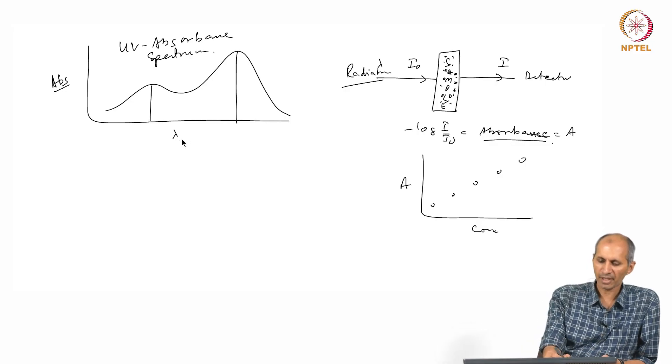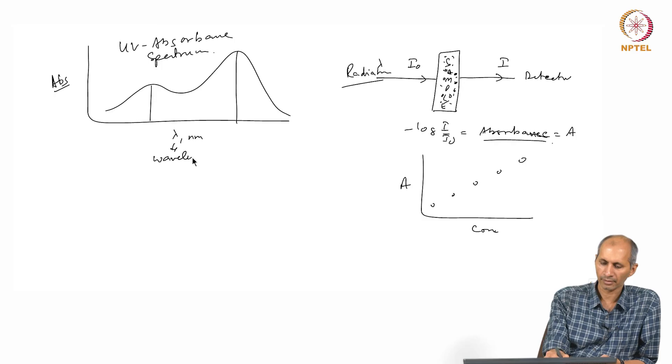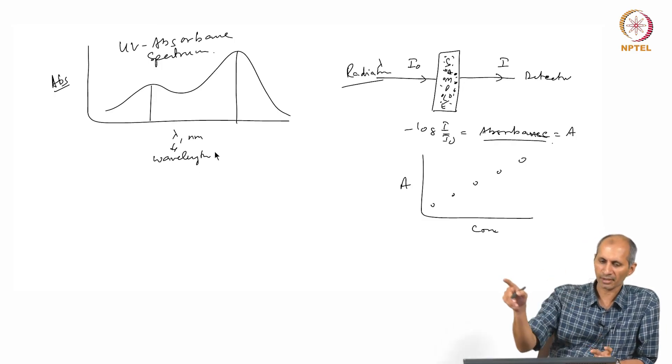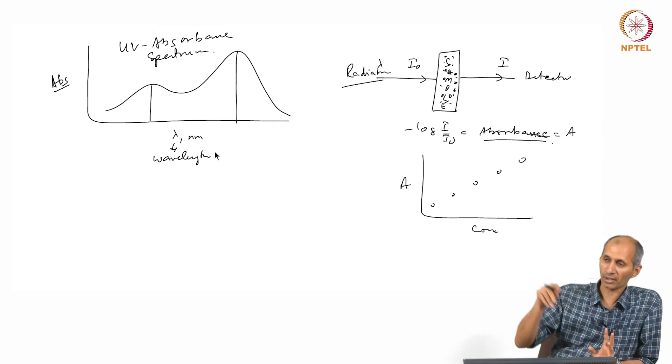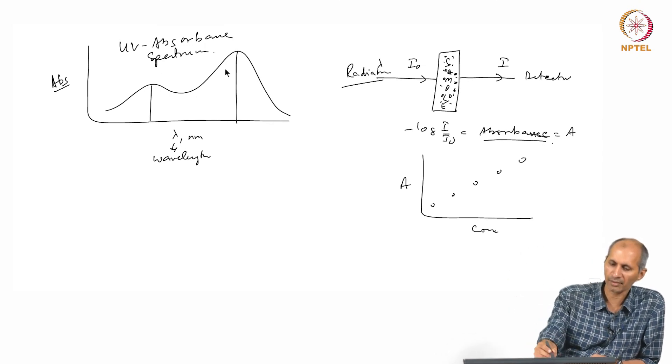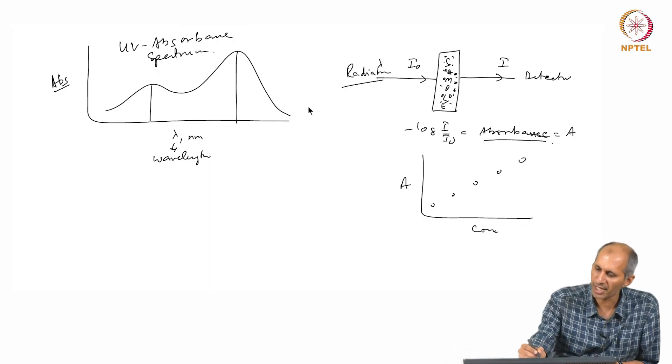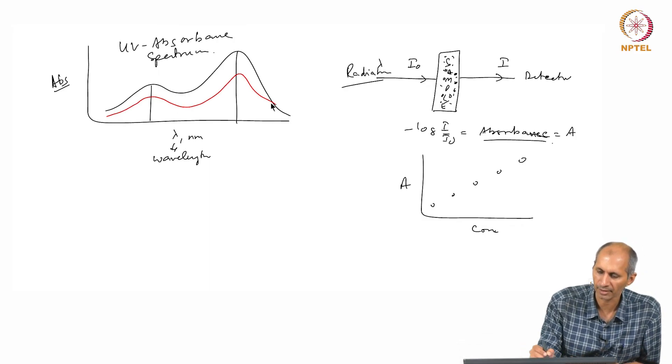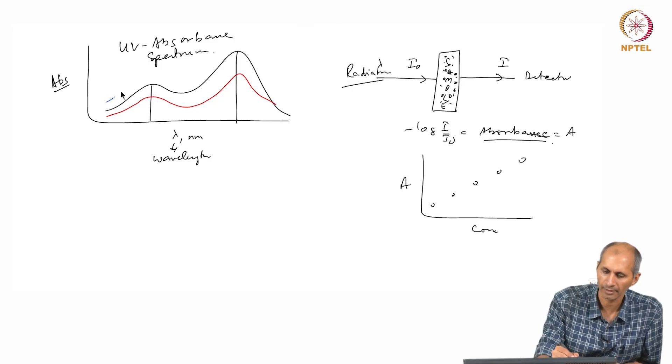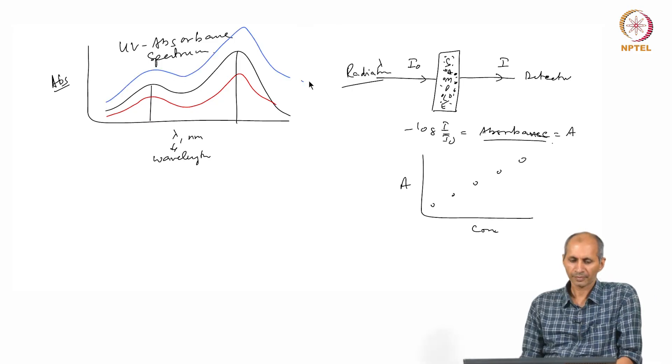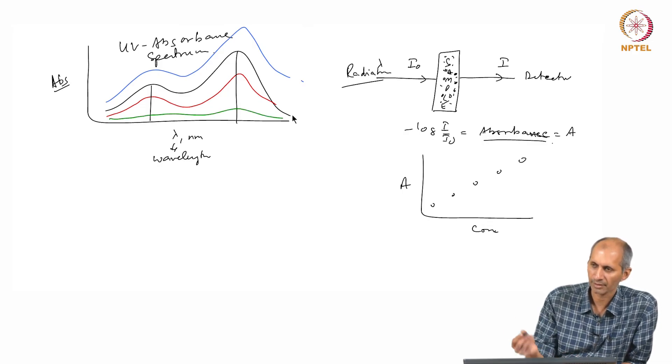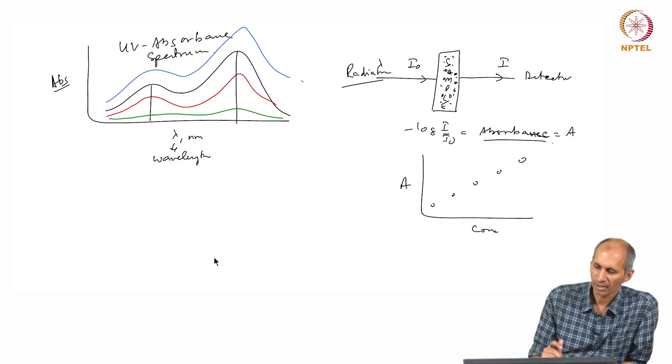There are lambda, lambda in nanometers is a wavelength. At one particular composition, one particular concentration, this molecule will show this up. It will show the same spectrum if the concentration is smaller or higher. There is a point where it can go all the way here, you cannot do anything.